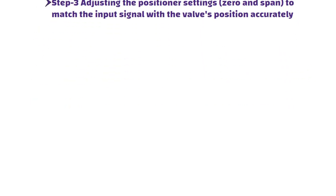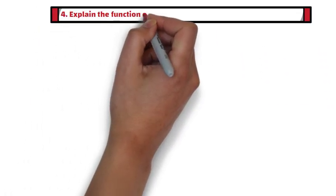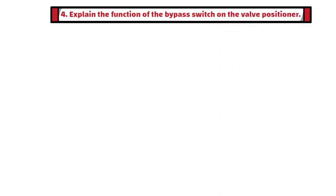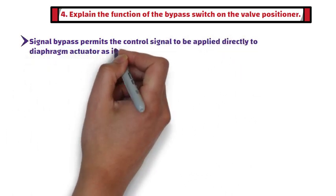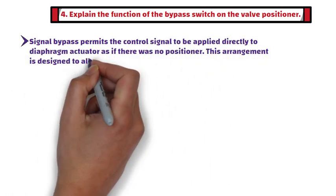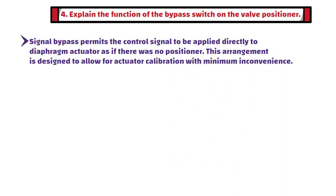Fourth question: Explain the function of the bypass switch on the valve positioner. Signal bypass permits the control signal to be applied directly to the diaphragm actuator as if there was no positioner. This arrangement is designed to allow for actuator calibration with minimum inconvenience.